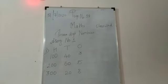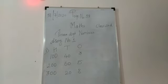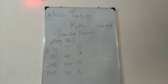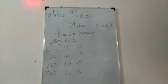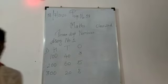You are supposed to count how many sticks are there in 100s, how many sticks are there in 10s, and how many sticks are in 1s. You need to write it in the correct column, the way how I have written it. Now we will go to assignment number 2.